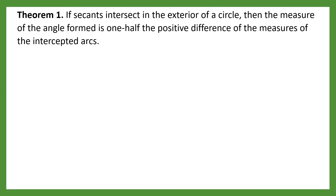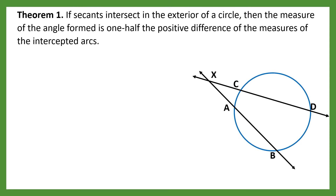Let's begin with Theorem number one. If a secant intersects in the exterior of a circle, then the measure of the angle formed is one half of the positive difference of the measures of the intercepted arcs. Here is the figure of two intersecting secants forming an angle, which is angle BXD.